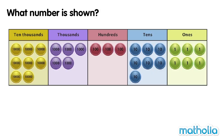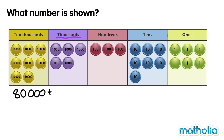What number is shown? Let's find the value of the counters in each place. In the ten thousands place, there are eight counters. They have a value of 80,000. In the thousands place, there are five counters. They have a value of 5,000.